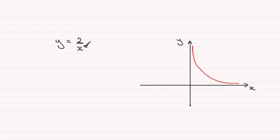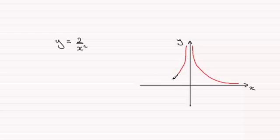Now because we're squaring the denominator, when we put in negative values of x we're going to duplicate exactly the same results as on the positive side. So we're going to get a graph looking something like this, where we just have a reflection in the y-axis.